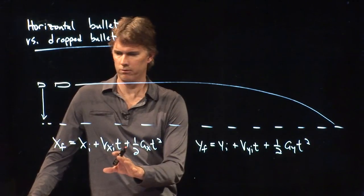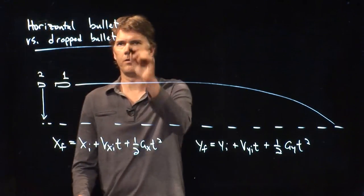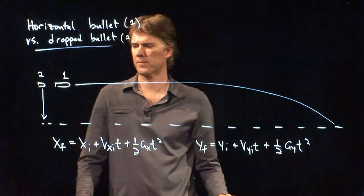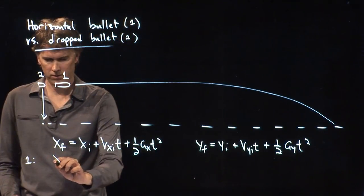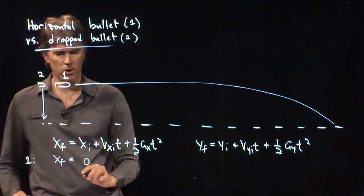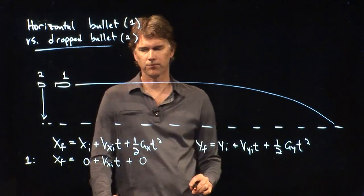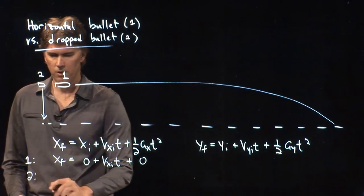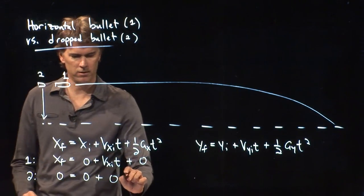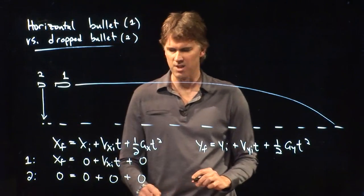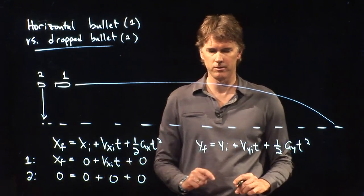Now, let's think about this x equation for a second. In the case of the bullet, we'll call this one number one, and this one number two. Horizontal bullet is number one, drop bullet is number two. In the case of bullet number one, we have x-final equals zero plus vxi times t plus zero. For bullet number two, we have zero equals zero plus zero plus zero. Not a lot of information in that equation right there, except to confirm that zero does equal zero, no matter how many zeros you add to it.